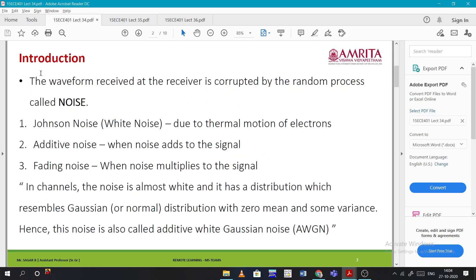Coming to the introduction part, the waveform received at the receiver is corrupted by the random process called noise. When a wave is getting received to a device, it will be corrupted by some noise - it can be thermal noise or many manual disturbances. There will be some noises in that random process because we can't predict them, so we call it a random process.